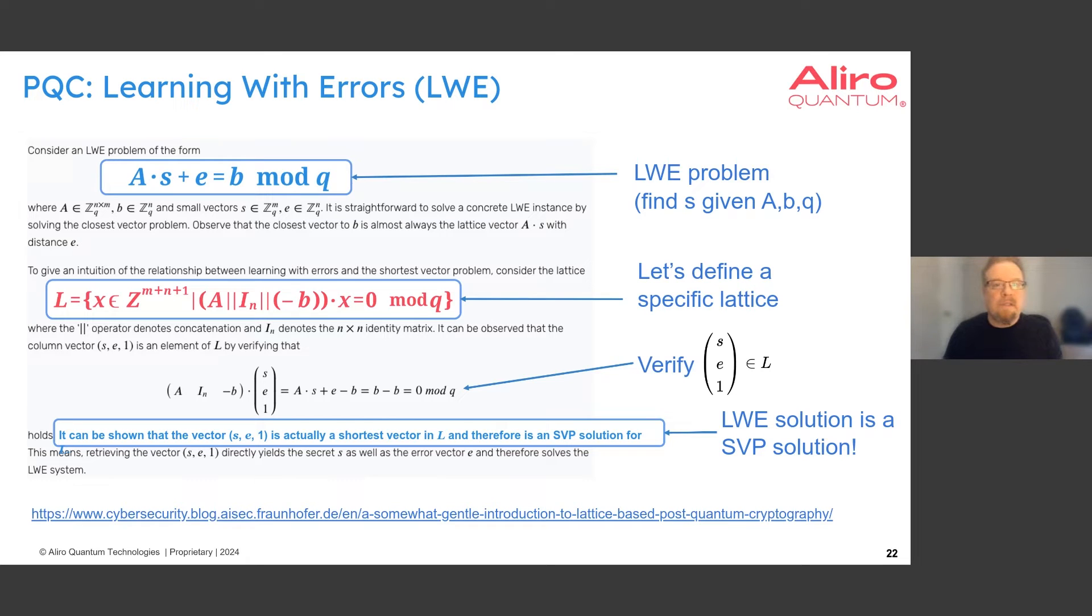And there's another algorithm that you see a lot in the literature on PQC, which is called learning with errors. The first equation is showing an instance of a learning with errors problem. So we're given a matrix A, a vector B, a modulus Q. And the question is, how do we find this solution vector S, given that an error vector or a noise vector has been added? This is almost like a linear system of equations where we've had noise added, modulo Q. So this is a hard problem to solve.